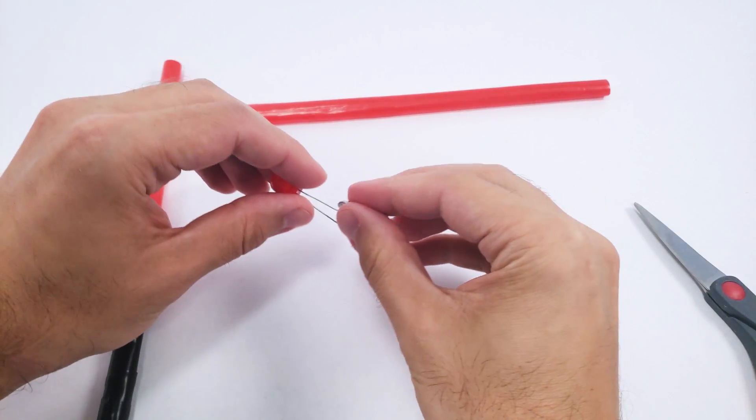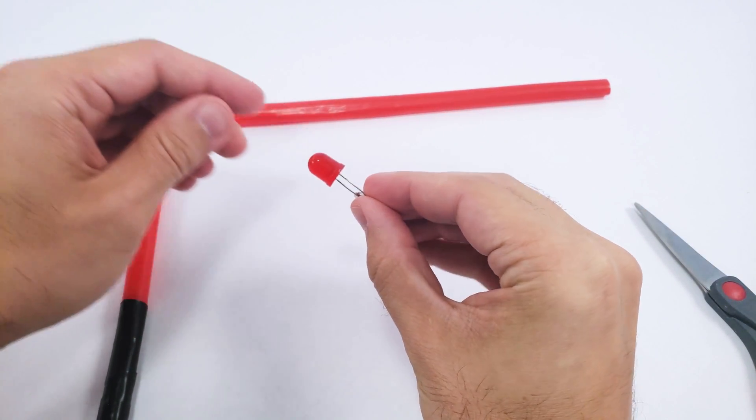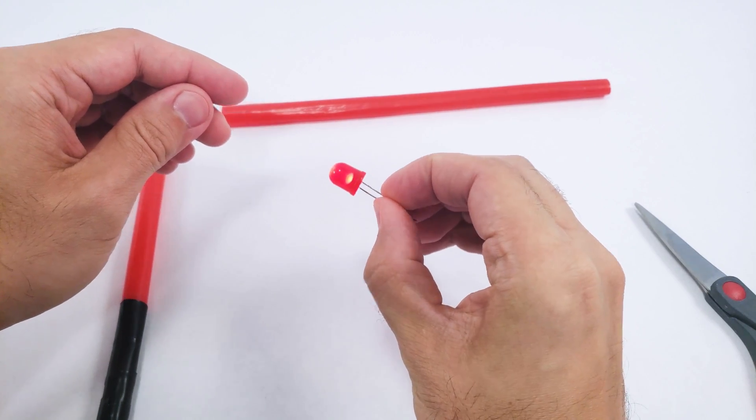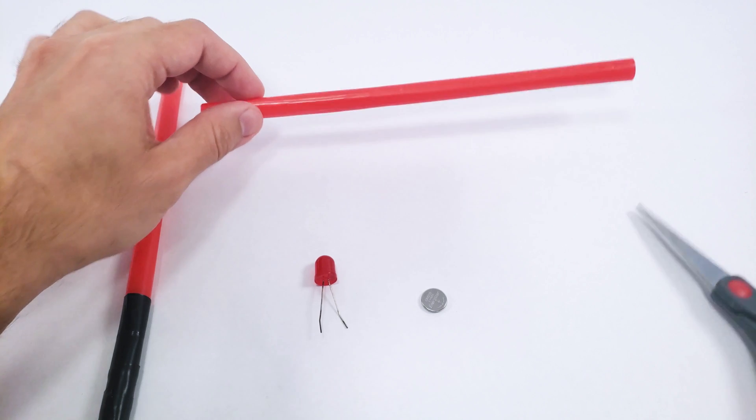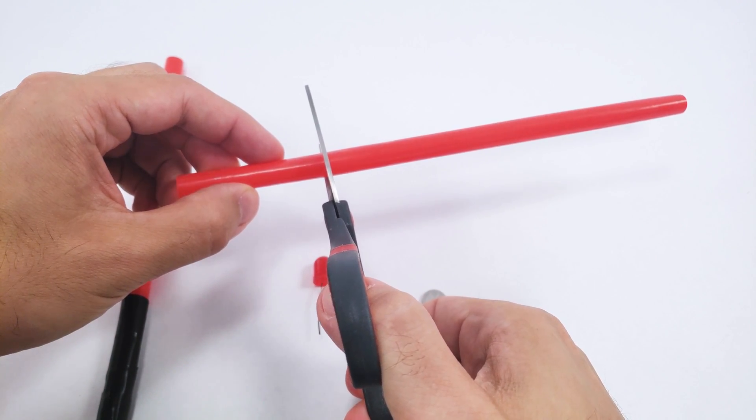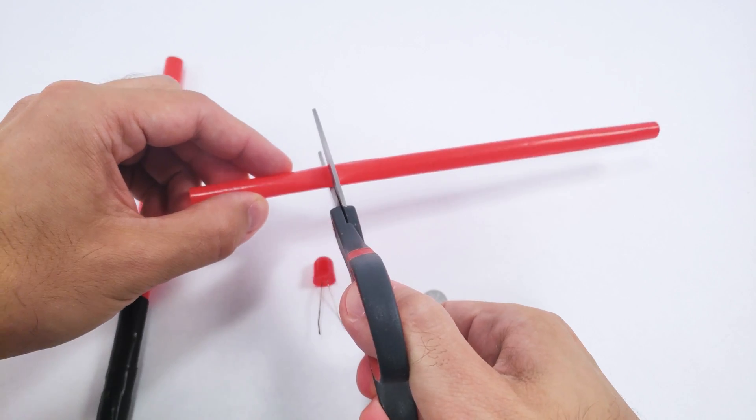So your goal here is to get the LED into the handle of your lightsaber so when you squeeze the handle, the LED lights up. We're going to do that first by cutting your milkshake straw to form the handle and the blade, so probably a little less than half of the length for the handle.